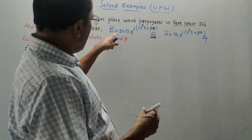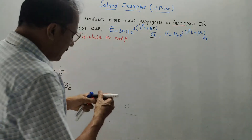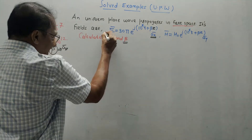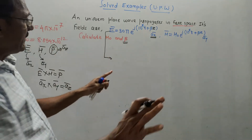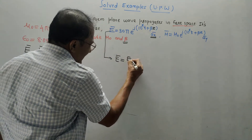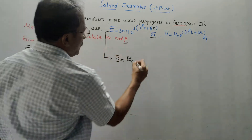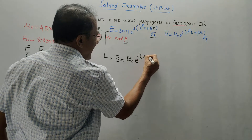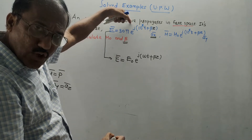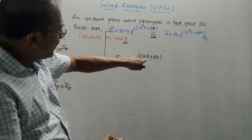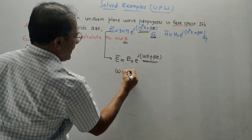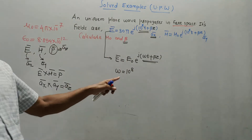Now with the given equations of E-bar and H-bar, the first part requires us to calculate H_0 and beta. We will first calculate beta. Write the standard equation in the same format as given in the question but in terms of notations like E_0 and e^(j(ωt + βz)). Comparing these two terms, we can easily say omega ω equals 10^8. Omega is angular frequency.